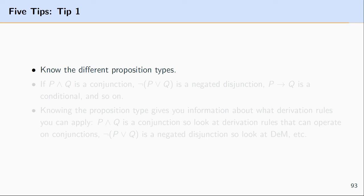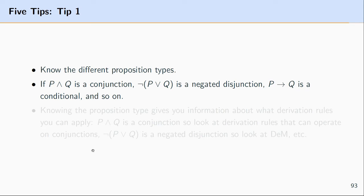The first tip is to know the difference between the various proposition types. If you're not able to identify a formula as belonging to a certain type, you'll struggle knowing which rule to apply. For example, P∧Q is a conjunction; NOT P or Q has negation as the main operator with disjunction next; and P→Q is a conditional. You want to identify the main operator and associate it with a particular proposition type.